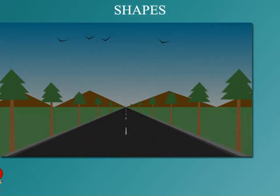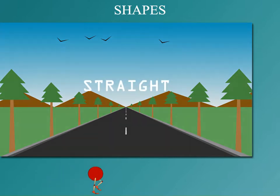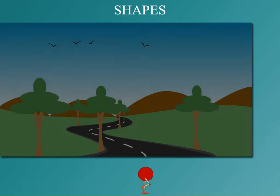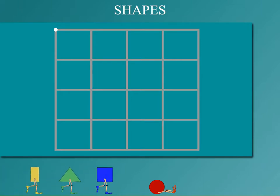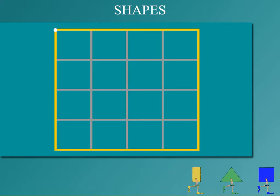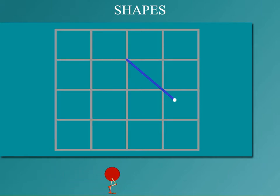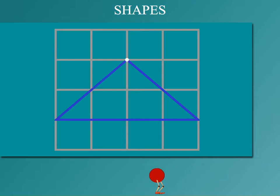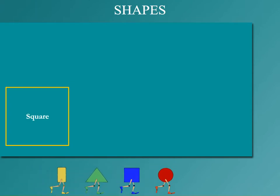Shapes! Here are some shapes. Look at this road — it is straight. Now look at this road — it is a curved road. Watch this pointer making straight lines. This is a square with four straight lines. This is a rectangle with four straight lines. The pointer is making a triangle with three straight lines.